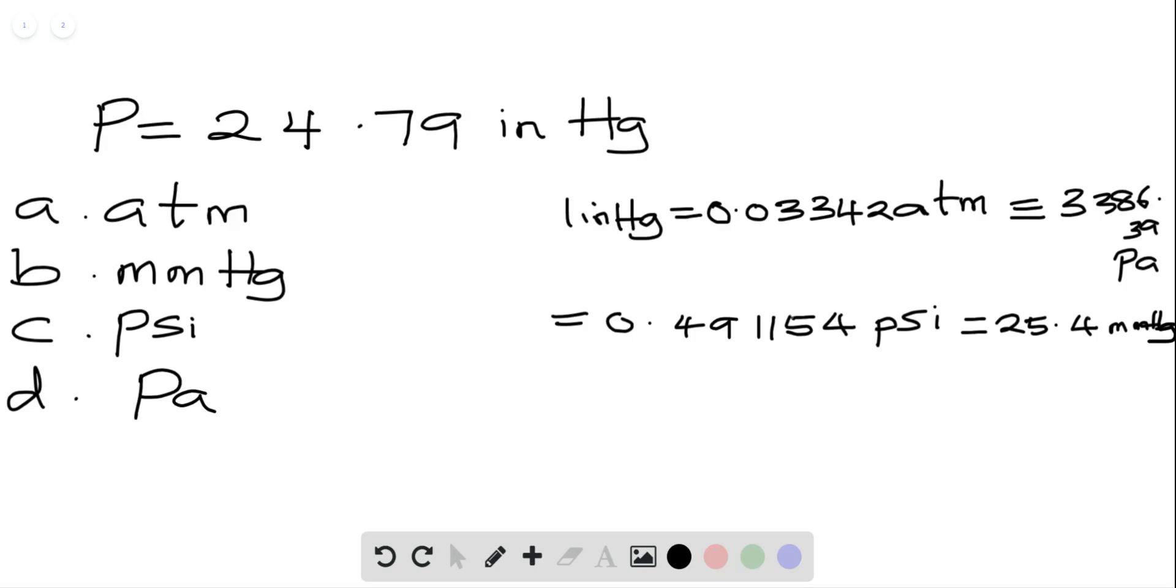So if we do the calculation, since we know how those factors convert to one another, then we'll be able to provide a solution to the problem. So in atmosphere, the answer will be 0.8322 atmosphere.